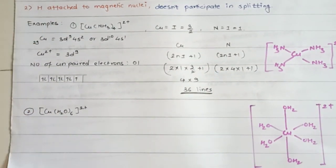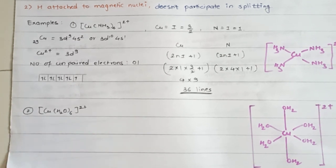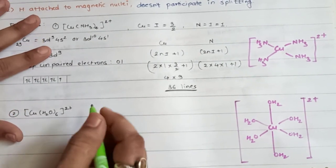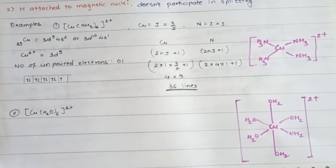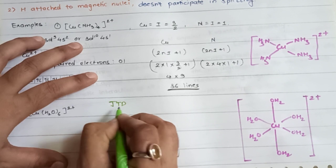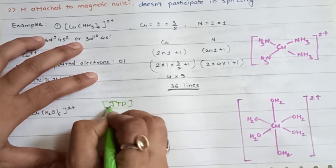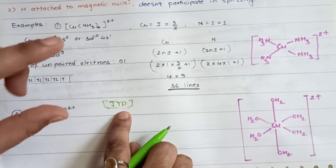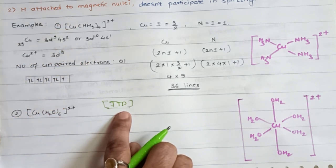Now let's see one more example: copper water complex, Cu(H₂O)₆²⁺. In this example you will encounter the term Jahn-Teller distortion. Jahn-Teller distortion is actually one type of geometrical distortion which is observed in transition metal complexes.